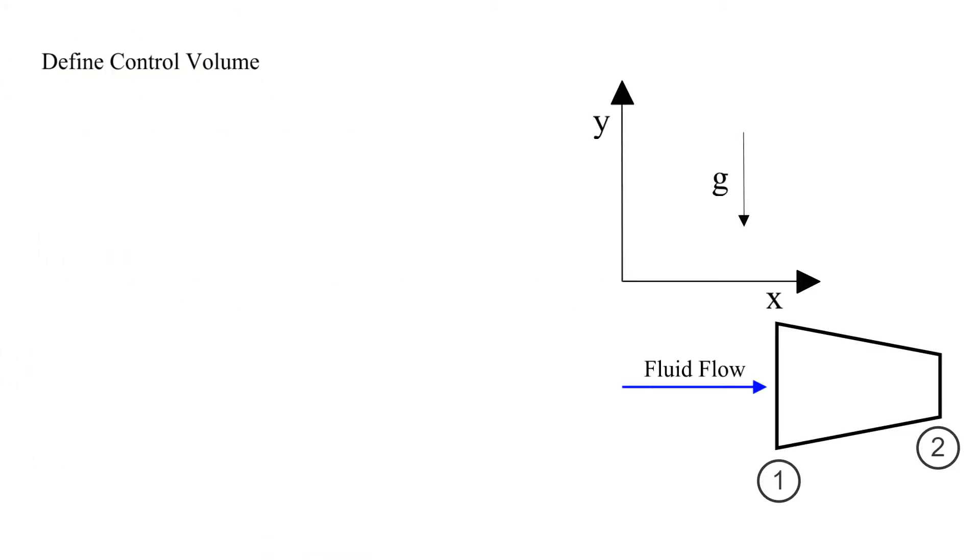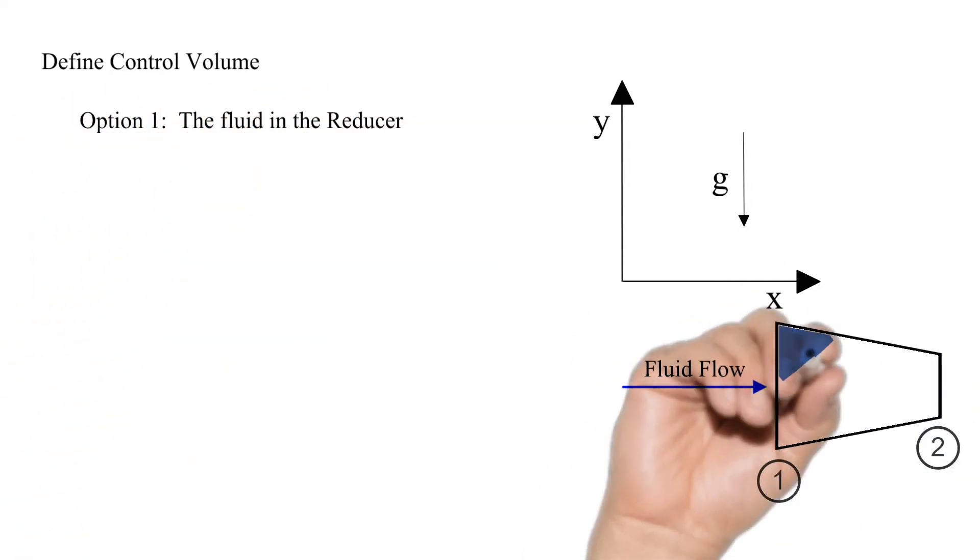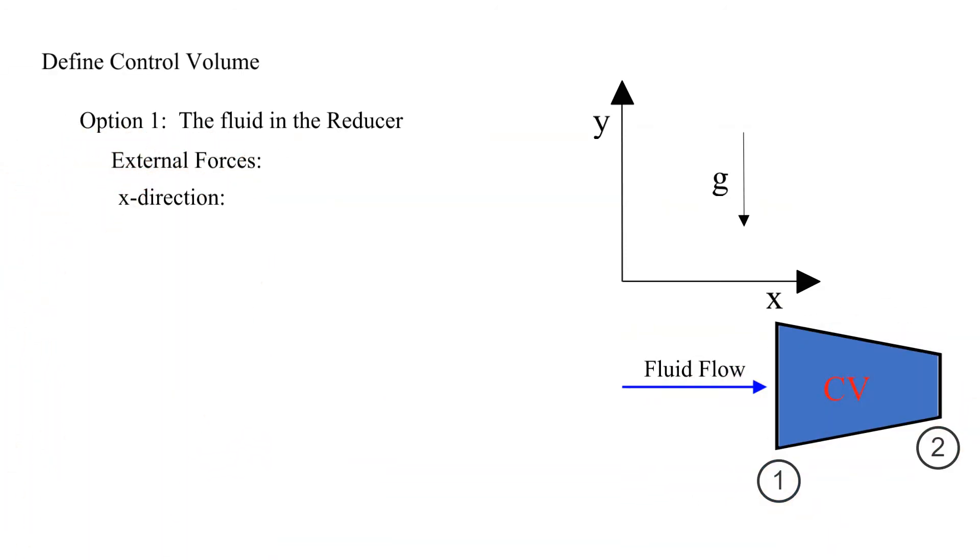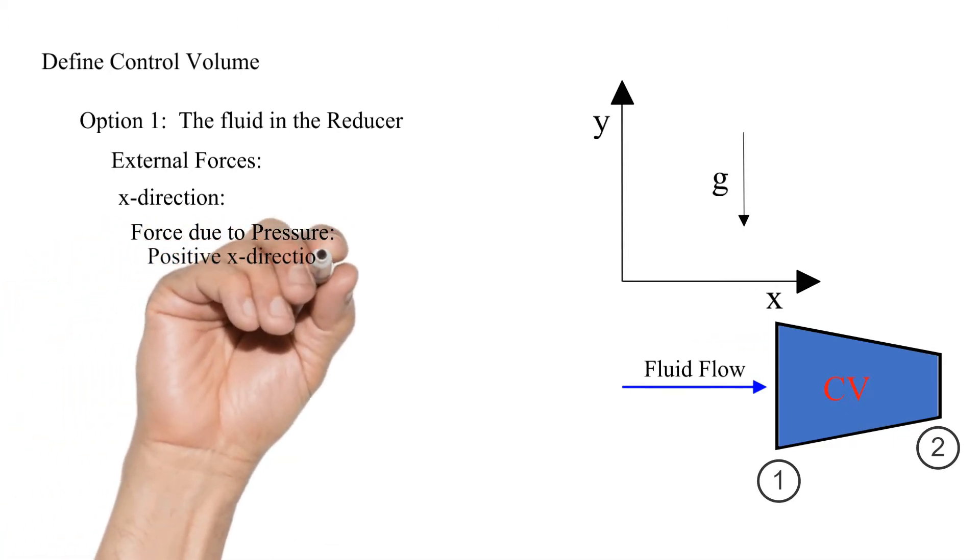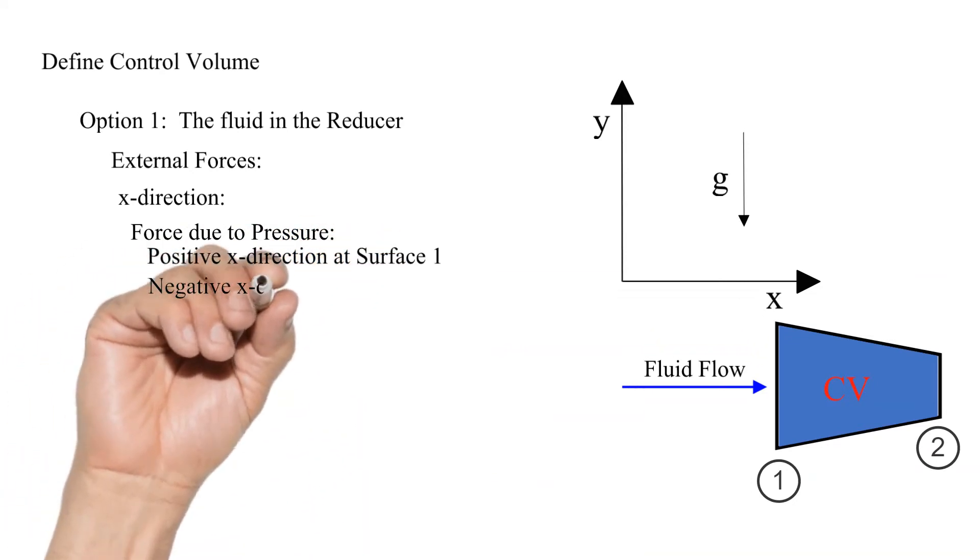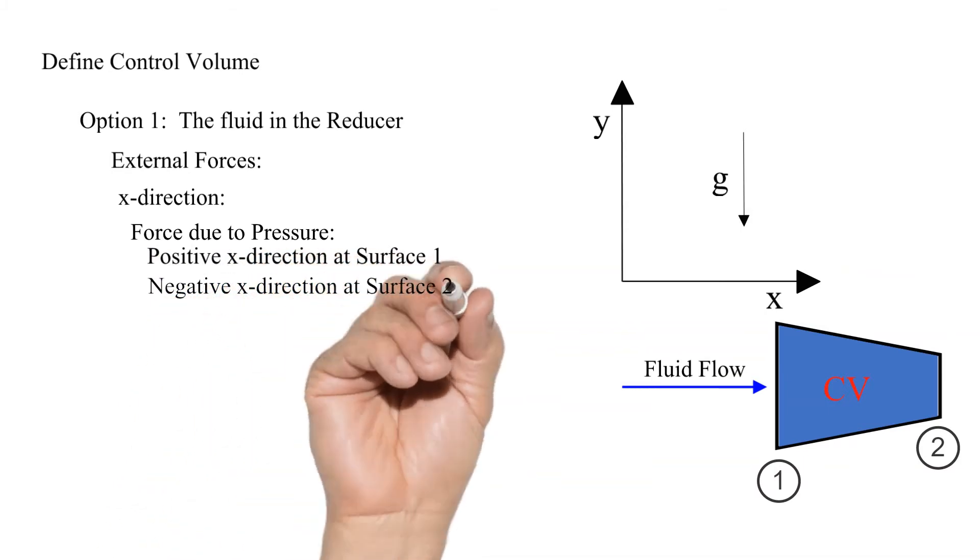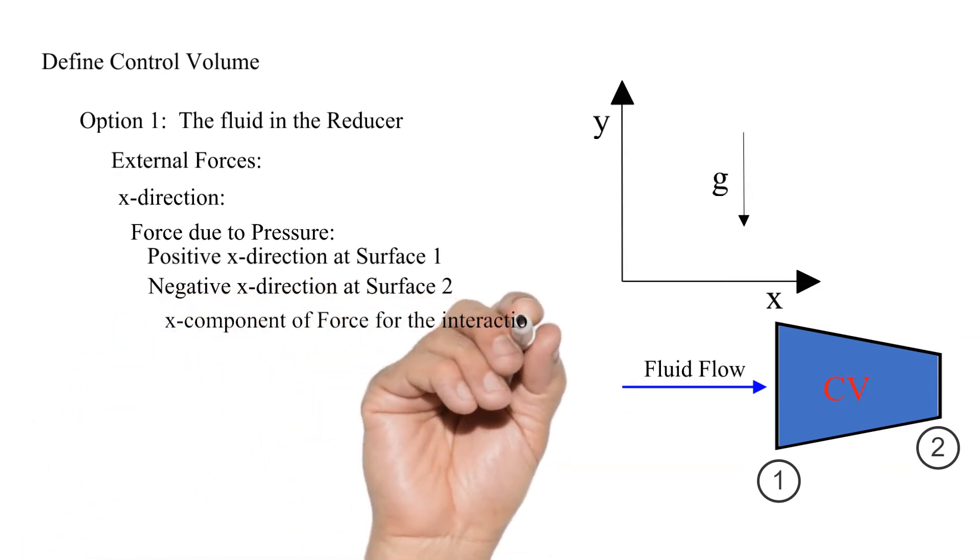We have several options. Option one is to define the fluid in the reducer as the control volume. We need to consider all of the external forces on our control volume. For now let's start with the x direction. Let's start with forces due to pressure acting on the control surface. We have a pressure force acting in the positive x direction at surface 1. We have a pressure force acting in the negative x direction at surface 2. Keep in mind the direction of pressure forces is always going into the control volume, don't get the signs wrong.